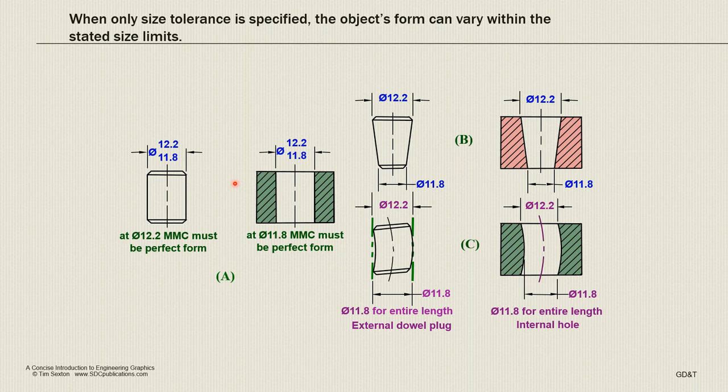The cylinder can be tapered with the maximum on one end and the minimum on the other, because it does fit within two concentric cylinders, one at 12.2 and one at 11.8. It's still within those limits. If we make the part as small as it possibly can be along its entire length, then we can bend the cylinder until its extreme points are 12.2, so it can take any shape as long as it stays within that limit.